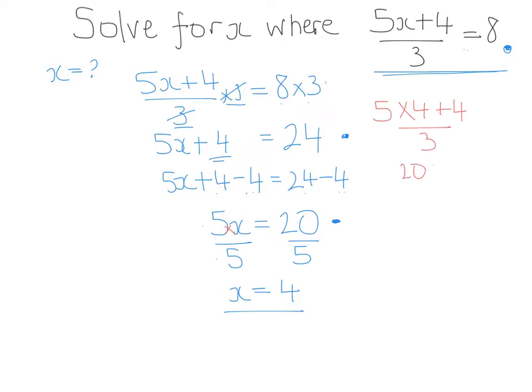5 times 4 is 20. 20 plus 4 divided by 3. 24 divided by 3 is 8, which is what it should be.